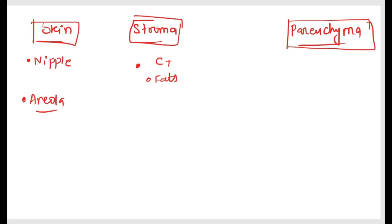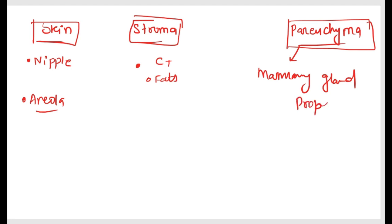Parenchyma is also known as the mammary gland proper. This is the most important component, and we are going to discuss each part one by one with the structure.